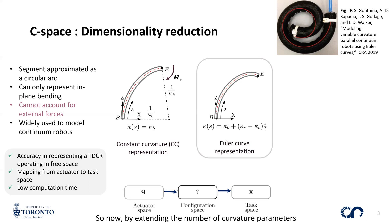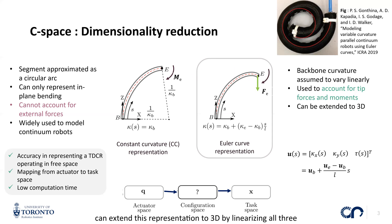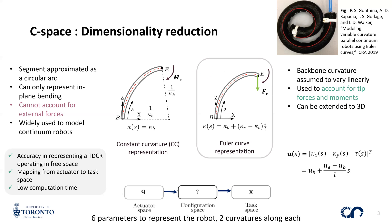By extending the number of curvature parameters to two, we can model not only the constant moment, but also an external force acting at the tip. We can extend this representation to 3D by linearizing all three components of curvature, with the configuration space now requiring just six parameters to represent the robot — two curvatures along each axis.